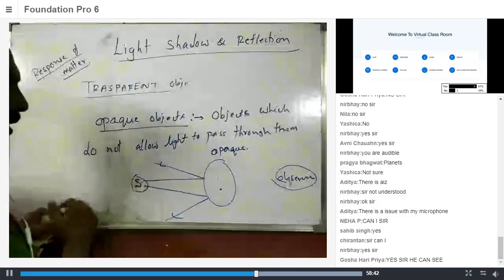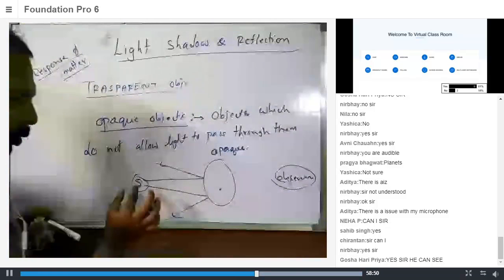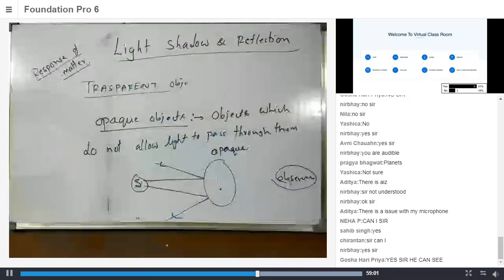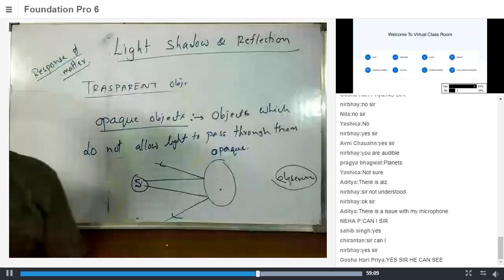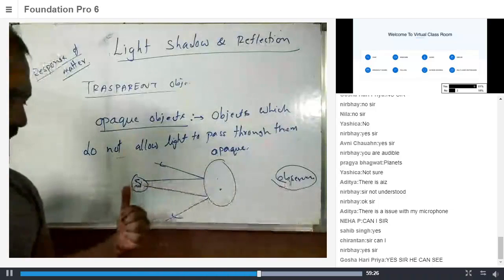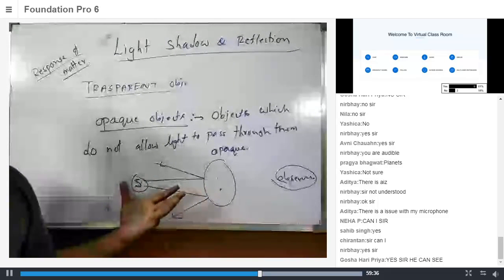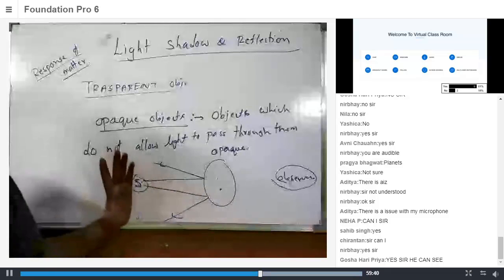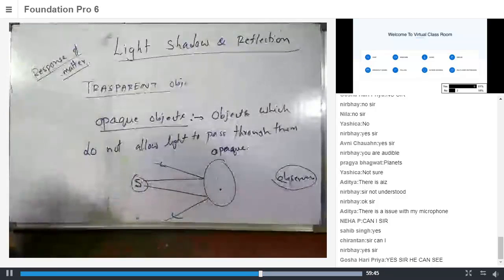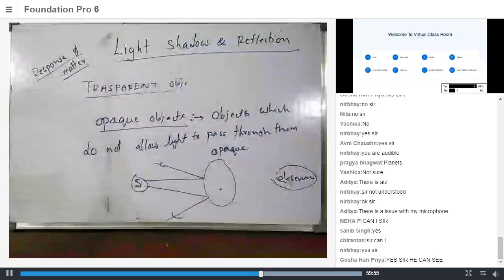Teacher sets up the next scenario: 'I have a source here, I have a huge opaque object, and I have an observer. Will the opaque object be visible?' A poll is launched. Some students report the poll is not appearing on their screen. Teacher asks everyone to answer — will the opaque object be visible? Yes or no?